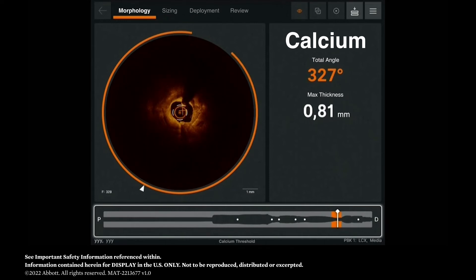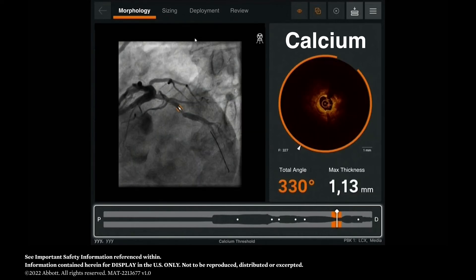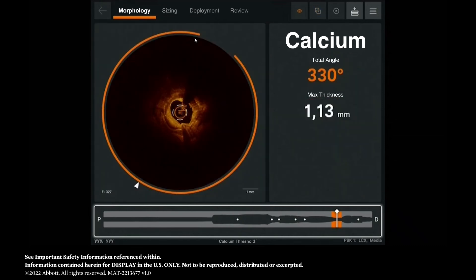I wanted to show you also how you can see the coregistration images to determine where this exact frame corresponds in angiography. You can see here, nicely shown, where this severe calcification is located in the angiogram.